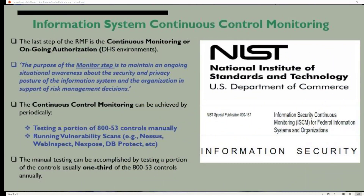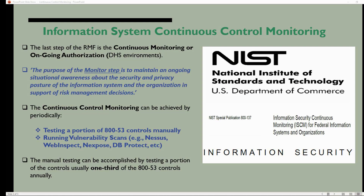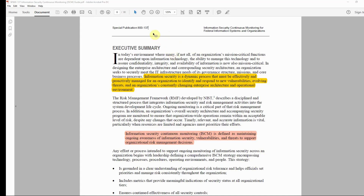Information system continuous control monitoring — the last step of the RMF — is the continuous monitoring or ongoing authorization. The purpose of the Monitor step is to maintain an ongoing situational awareness about the security and privacy posture of the information system and organization in support of risk management decisions.